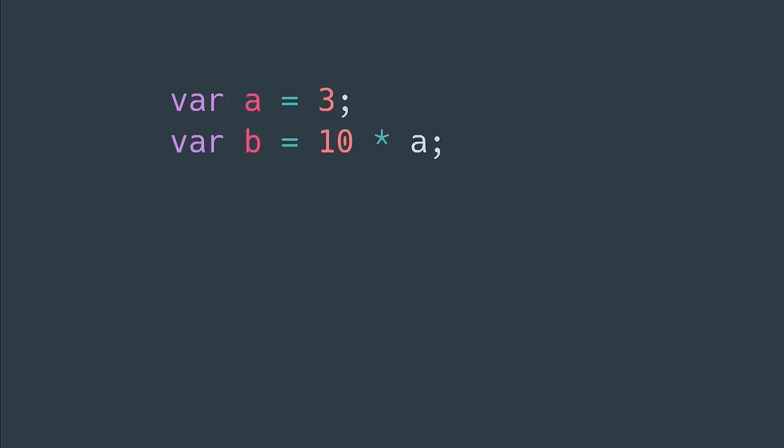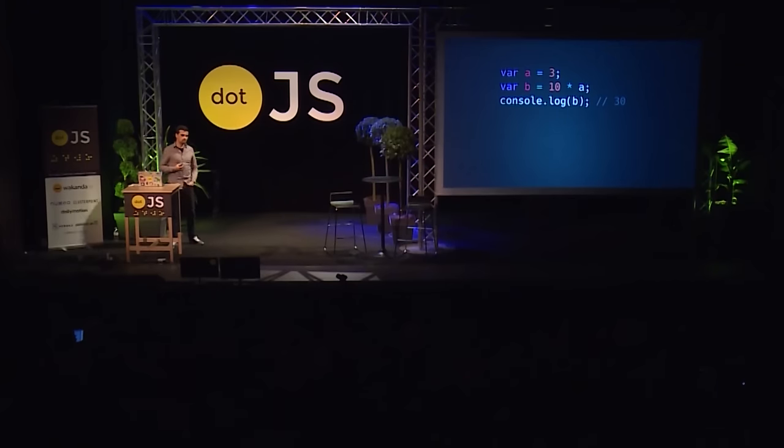That's a pretty long sentence, and that's why I have a presentation here to explain all that. Let's say you have this pretty simple JavaScript code. Everyone here should understand this. You have a variable A, which is initialized to 3, and then B is set to 10 times A. So what is the value of B? Well, as you can see, if you console log, that is 30, obviously.